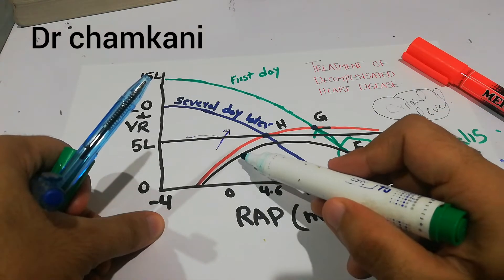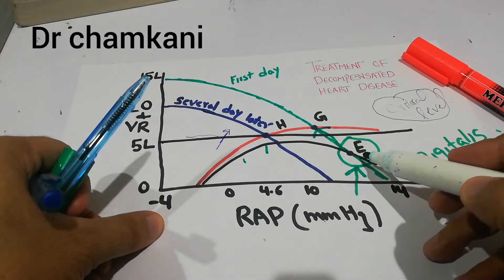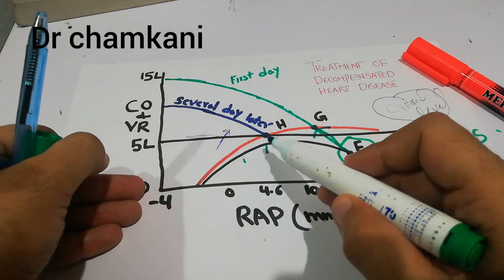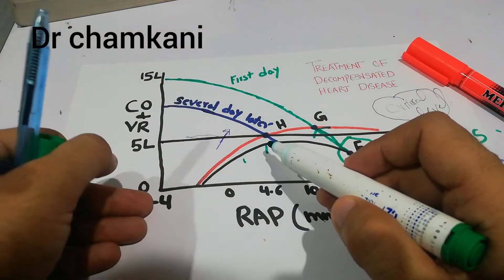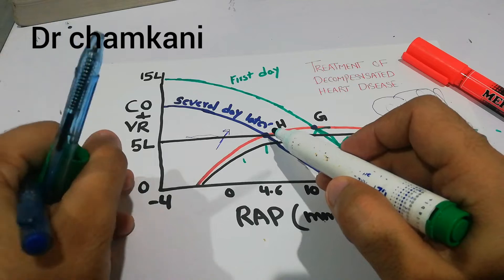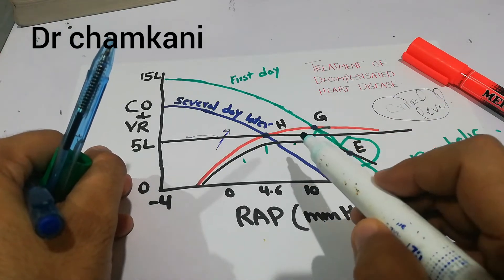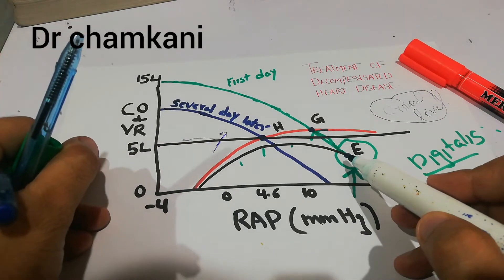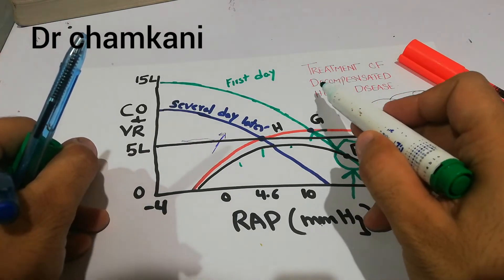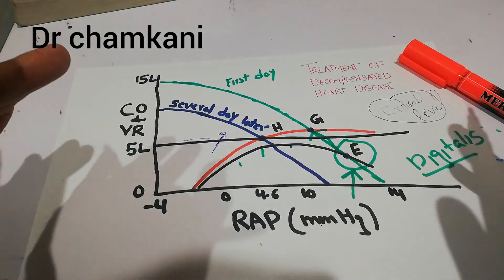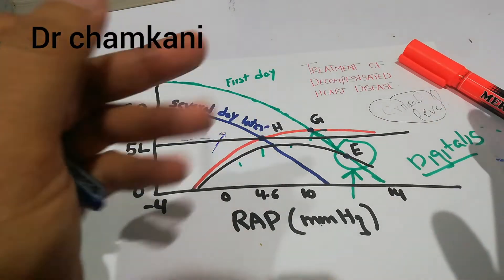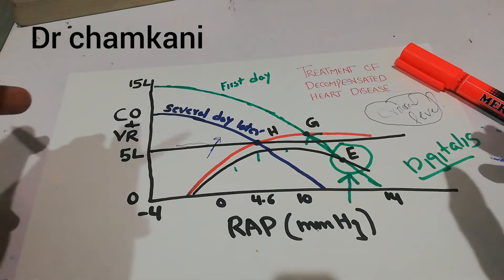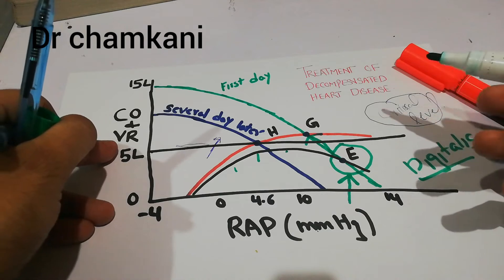Initially, the heart had progressed through points A, B, C, D, and E as it was trying to compensate. There were compensatory processes trying to increase the cardiac output. In compensated heart failure, cardiac output could increase above the 5-liter mark, but in decompensated failure, it could only reach point E and could not go above this mark. Once decompensation starts, it is mandatory to begin medical treatment, as intrinsic processes alone cannot bring the heart out of decompensation.